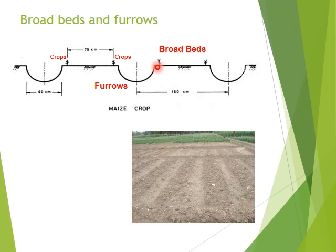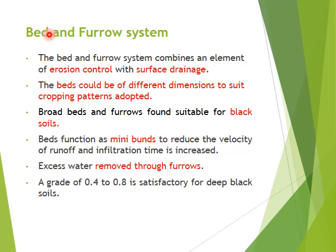Next is broad beds and furrows. This is a broad bed — you can also see it in the field. The furrow is where the water is discharged, and in the bed you can grow plants or crops. The bed and furrow system has two main functions: one is erosion control and another is surface drainage. The beds can be of different dimensions, and this system is suitable for black soils. The bed functions as a mini bund, reducing the velocity of water, while the excess water is removed through the furrows.